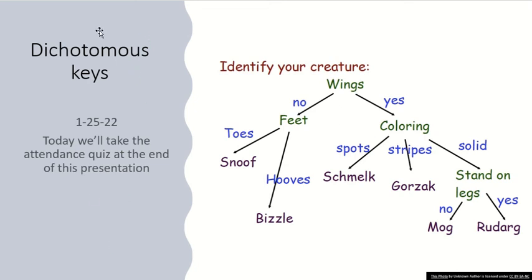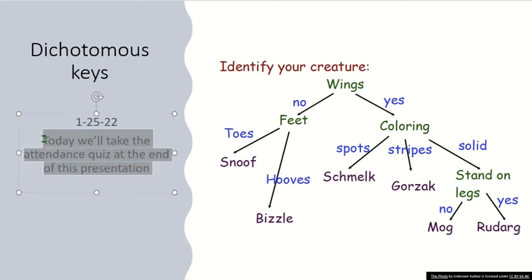Today we're talking about dichotomous keys and how to use them, and we're also doing an activity with a worksheet where you'll be making a dichotomous key as well. We'll also be taking the attendance quiz at the end of the presentation. If you're having technical issues and don't see the question in the attendance quiz, please just email it to me via Canvas or your UCR email.